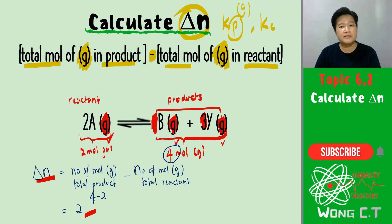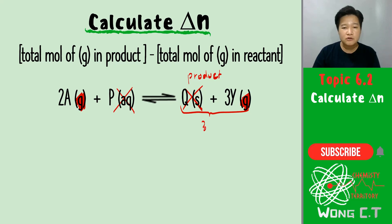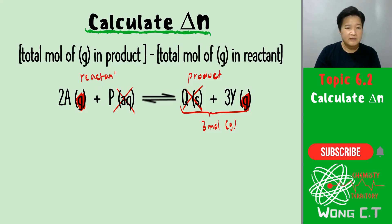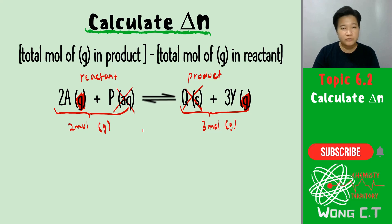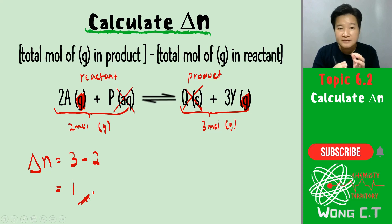Let's try another example. Check the physical phase: that species is a gas — take it; that one is aqueous — skip it; that one is a solid — skip it; and that one is a gas — take it. Total moles of gas on the product side is 3. In the reactant, only 2 moles of gas, because P is aqueous. Therefore, delta N is 3 minus 2, which equals 1.